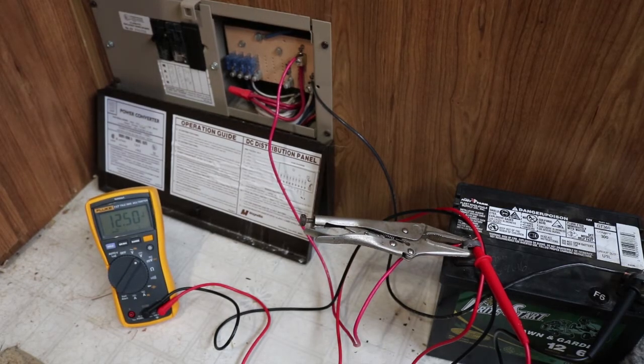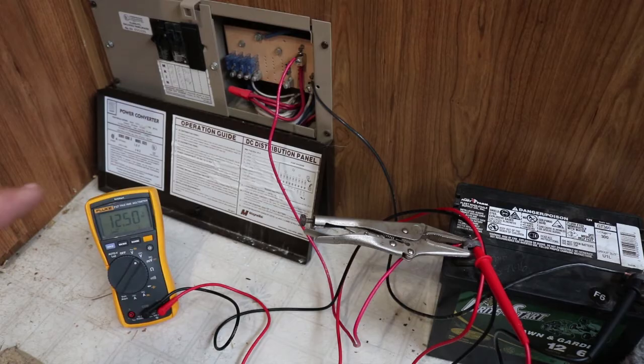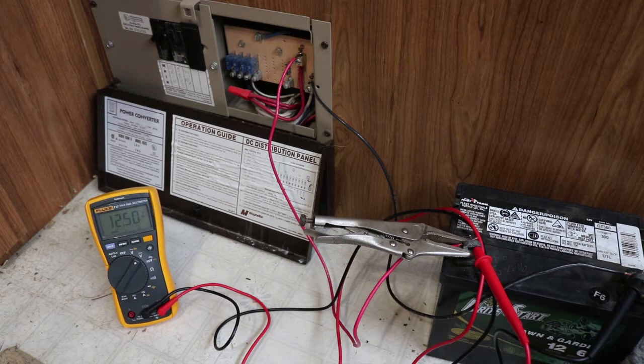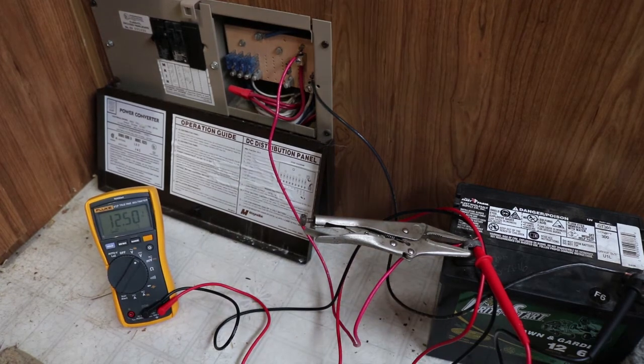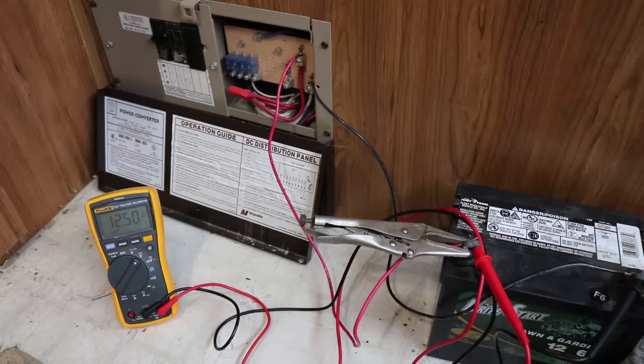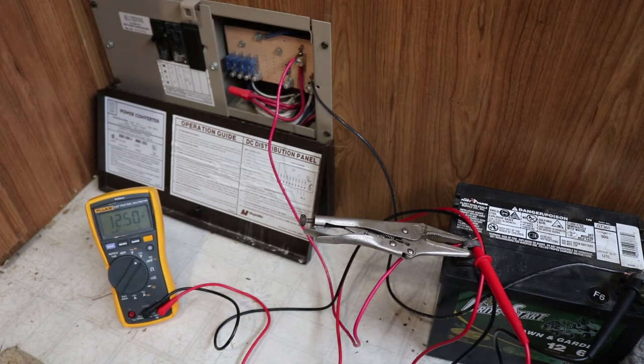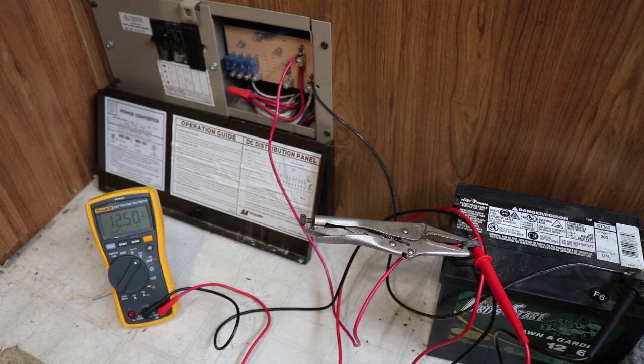Without further ado, if you watch the meter here, it's at 12.5 volts. When I flip on the breaker, it's going to go up to almost 14 volts, which is charging. Then if you let it go for a while, it'll actually start to decrease because the battery is fully charged. So I'm going to demonstrate that here.